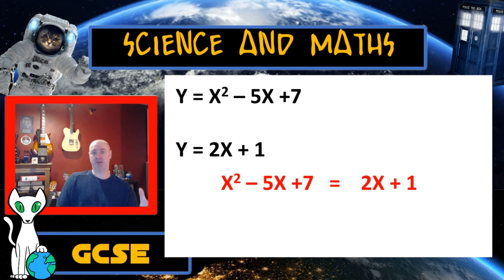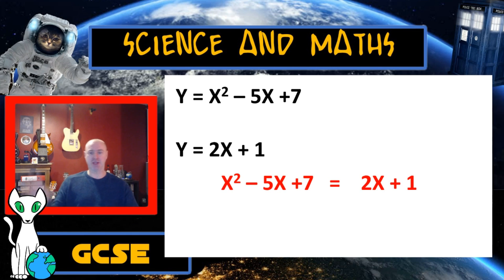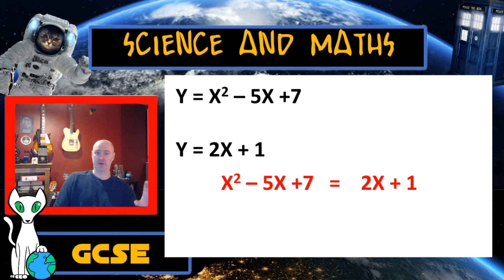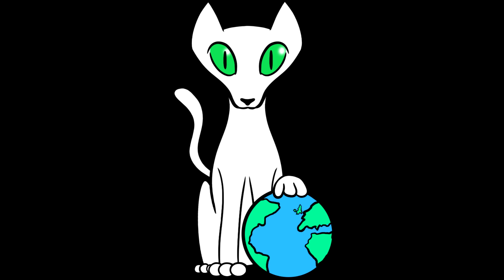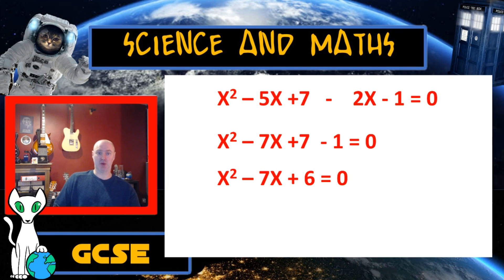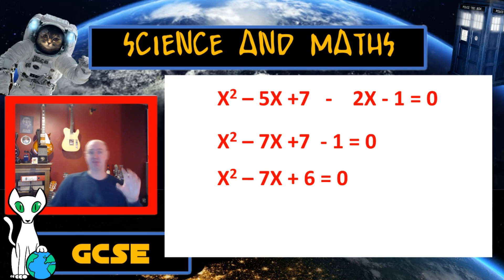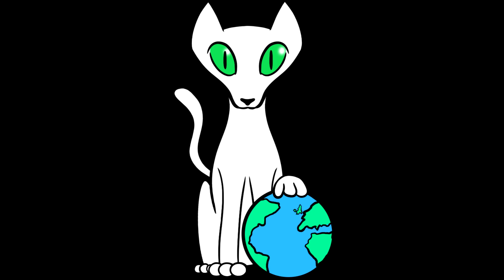Once I know that they are both equal to y, I can say that 8x squared minus 5x plus 7 — which is the top expression — equals 2x plus 1. They are going to be the same number; they are both y. If I take that 2x plus 1 and move it across to the other side of the equals sign — in other words, subtract it from the first equation — my answer has to be 0. From this point I simplify: minus 5x minus 2x gives me minus 7x; plus 7 minus 1 gives me plus 6. So now I've simplified that to x squared minus 7x plus 6 equals 0.